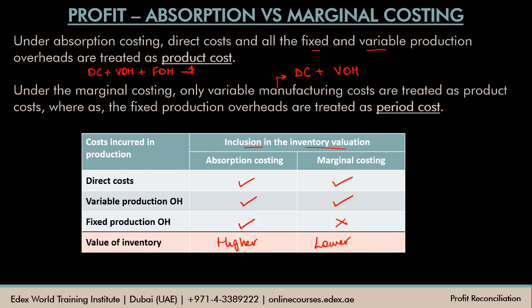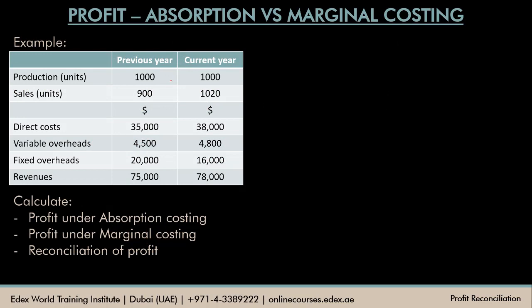Let's go to an example. Production in the previous year was 1,000 units and sales was 900 units. No details about opening inventory are given for the previous year, so we assume opening inventory is 0. Closing inventory becomes 100 units — 1,000 produced minus 900 sold. That closing inventory becomes the opening inventory of the current year, so opening inventory in the current year is 100 units. In the current year we produced additional 1,000 units, so we could have sold 1,100 units total. We ended up selling only 1,020 units, so closing inventory at the end of the current year is 1,100 minus 1,020 = 80 units.